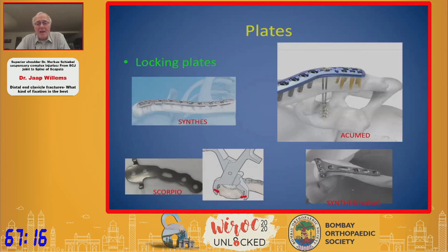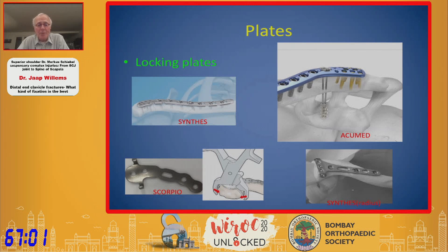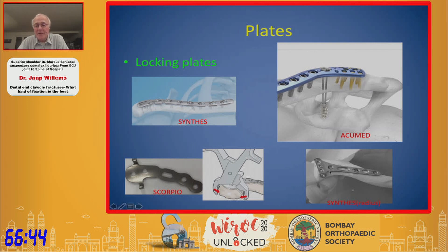Locking plates became popular over the last 10 to 20 years. Here are some examples: locking plates combined with reconstruction of the CC ligaments using a tight rope. There is also an interesting Japanese plate called the Scorpio, especially for comminuted fractures — it compresses the comminuted lateral part and may improve stability. You can also adapt a radius plate with oblique screws for a wider fixation of the lateral clavicle.